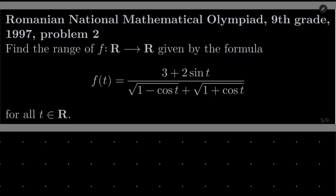Hello friends. In this video I'd like to solve the following problem from the Romanian National Mathematical Olympiad, 9th grade, 1997, problem number 2. We want to find the range of the function f(t) = 3 + 2·sin(t) over (√(1 − cos t) + √(1 + cos t)) for all real numbers t.